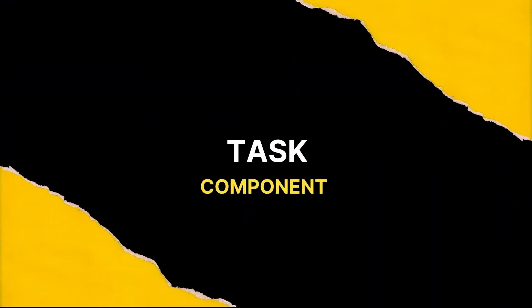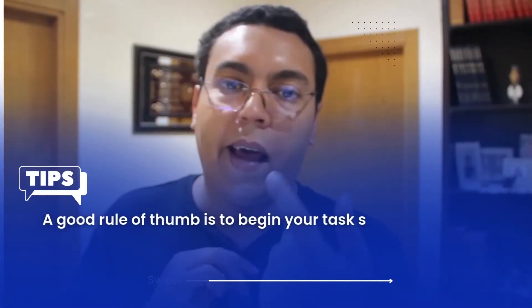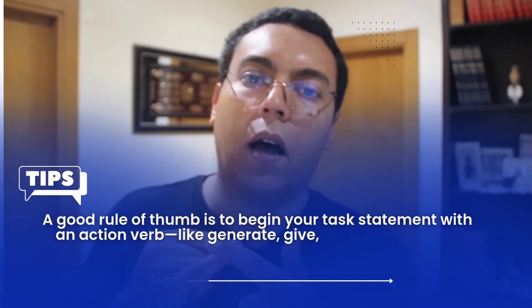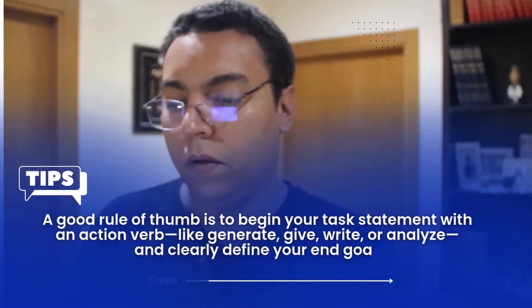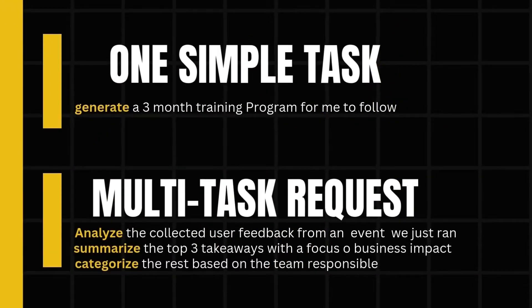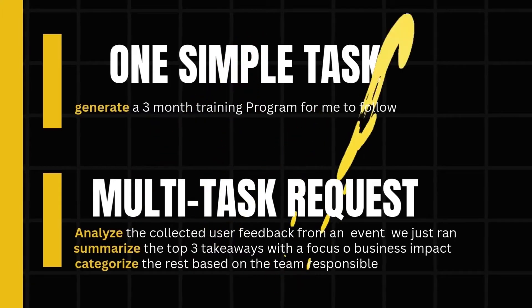A good rule of thumb is to start your task statement with an action verb like 'write,' 'analyze,' or 'categorize,' and clearly define the end goal. This could be a straightforward request like generating a three-month program, or a complex multi-step task like analyzing hundreds of user feedback, summarizing into three top takeaways, and categorizing feedback by the team responsible.